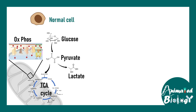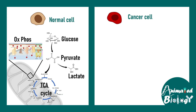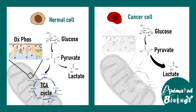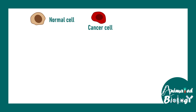Oxidative phosphorylation is preferred when oxygen is present. In the case of cancer cells, glucose is converted more into lactate — pyruvate eventually forms lactate — and only a small amount of oxidative phosphorylation occurs. This shift in metabolism is quite advantageous to the cancer cell.